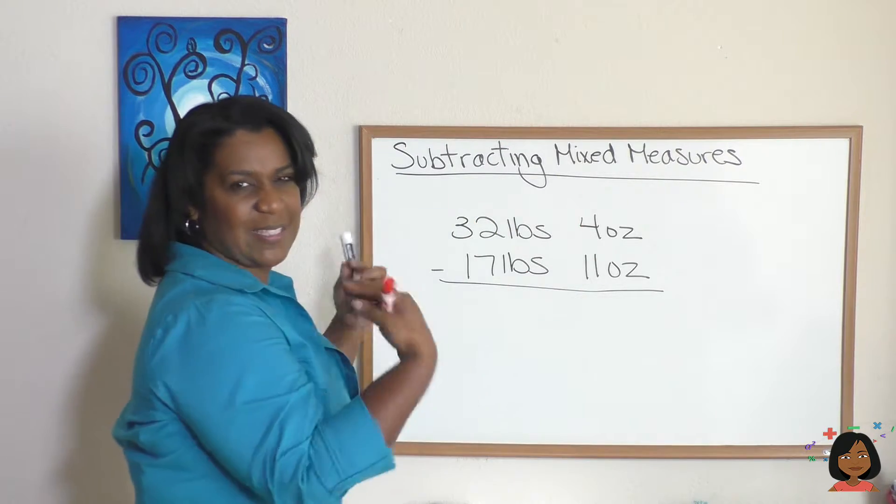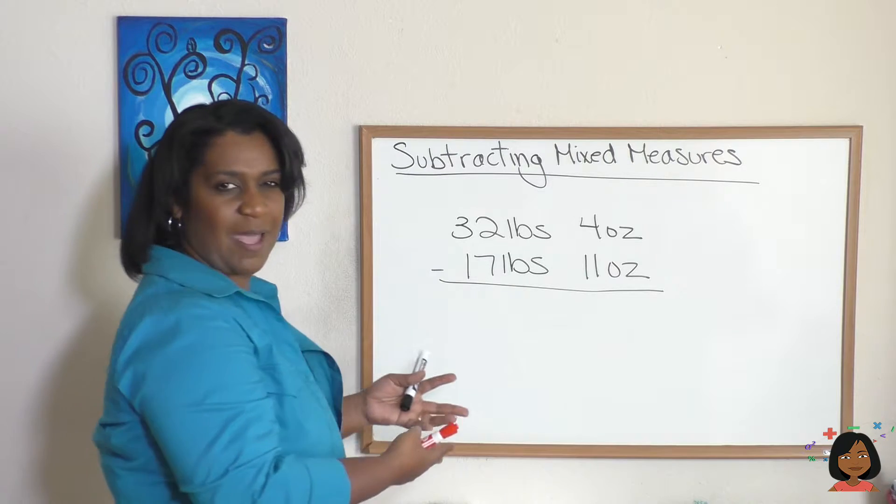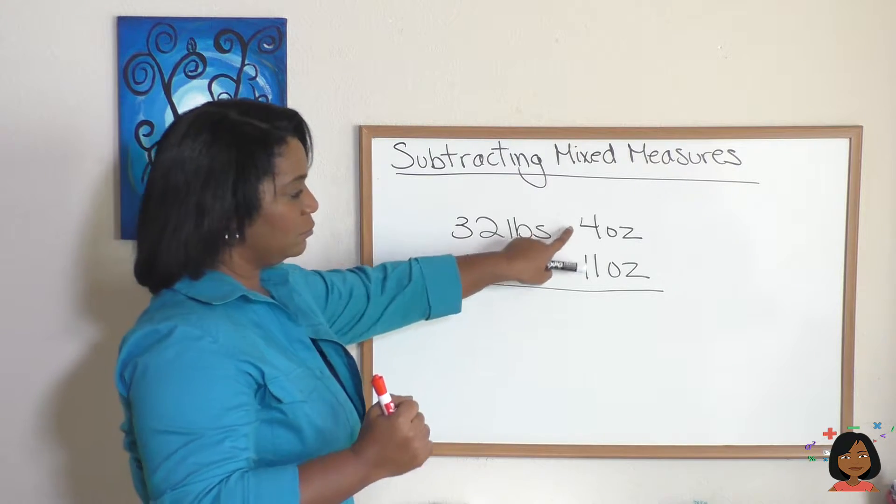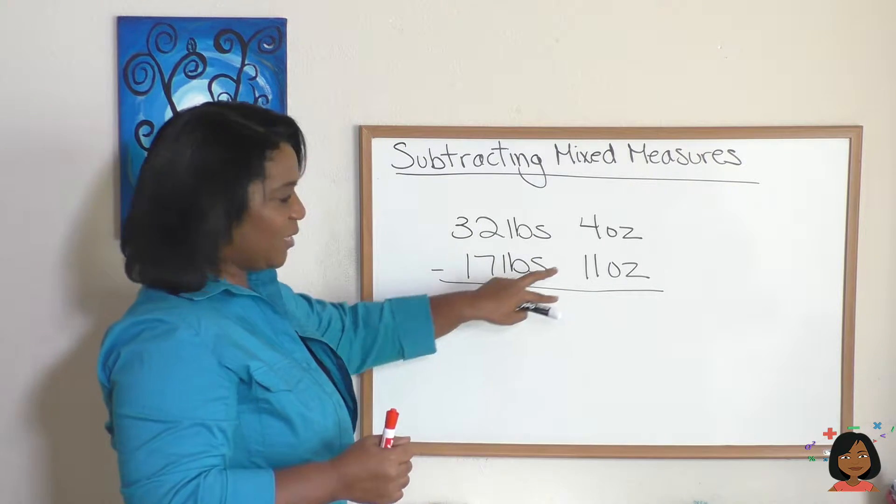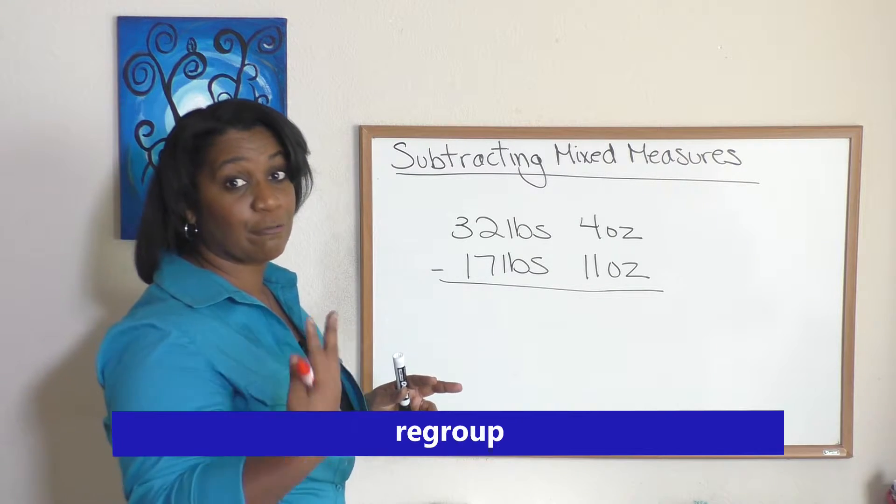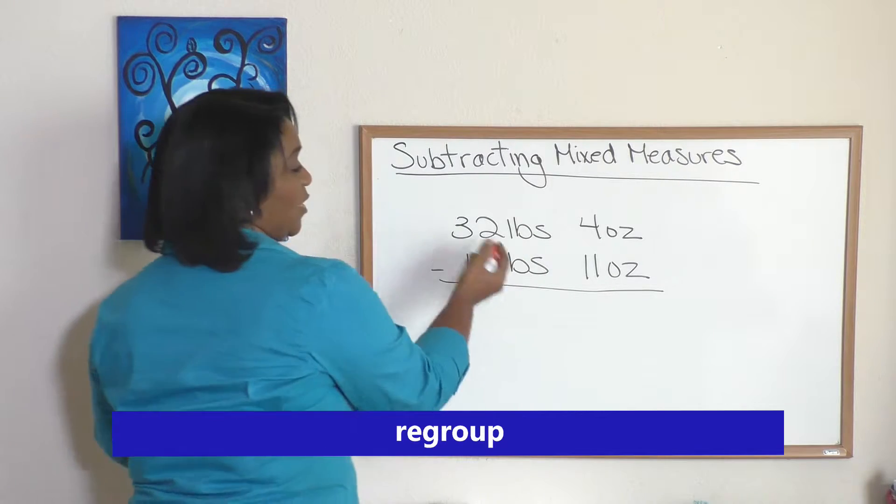We have a problem with the ounces, don't we? Can't take 11 from 4, so we have to regroup. Okay, so which means we're gonna cross out our 32, it's gonna go down to 31, but we're gonna bring 1 pound over to our ounces.